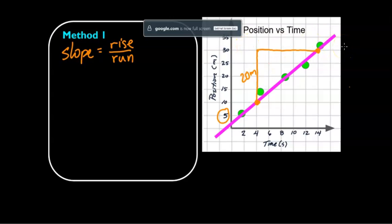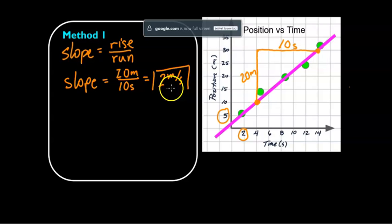And then going towards the right, each box does not represent one unit. It actually represents two units. So we're going to go two, four, six, eight, ten. So that's going to be 10. And the units down there is seconds. So the slope is 20 meters divided by 10 seconds and 20 divided by 10 is two meters per second. So our slope here is two meters per second.